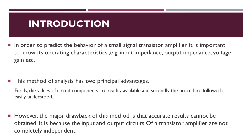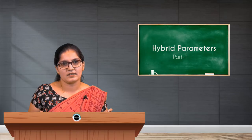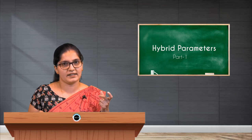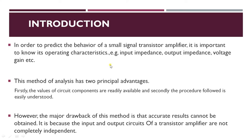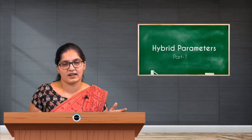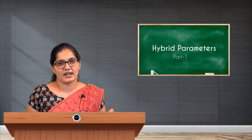In order to predict the behavior of a small signal transistor amplifier, it is important to know its operating characteristics such as input impedance, output impedance, and voltage gain. To study the operating characteristics of a transistor, we can use different methods. In the H parameter method, we are going to see how input impedance, output impedance, and voltage or current gains can be calculated.